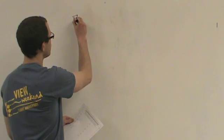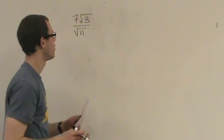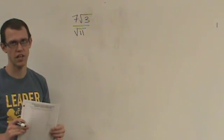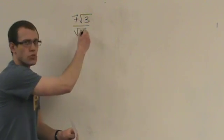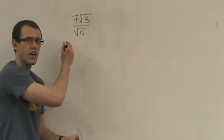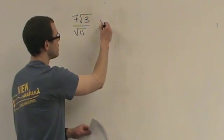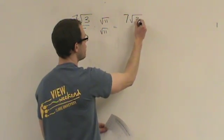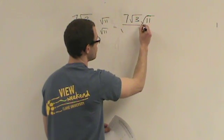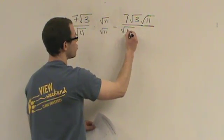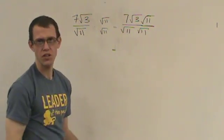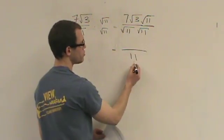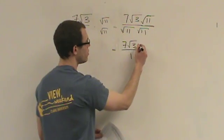Let's do another example: 7 square roots of 3 divided by the square root of 11. We see a radical in the denominator, so we want to get it out. We take the numerator and the denominator multiplied by the square root of 11 — we do it by the square root of 11 so that it becomes no longer a radical. You always multiply by the denominator's radical. So we get 7 square root of 3 times the square root of 11 in the numerator, and the square root of 11 times the square root of 11 in the denominator. That denominator is a pair, so it reduces to 11.